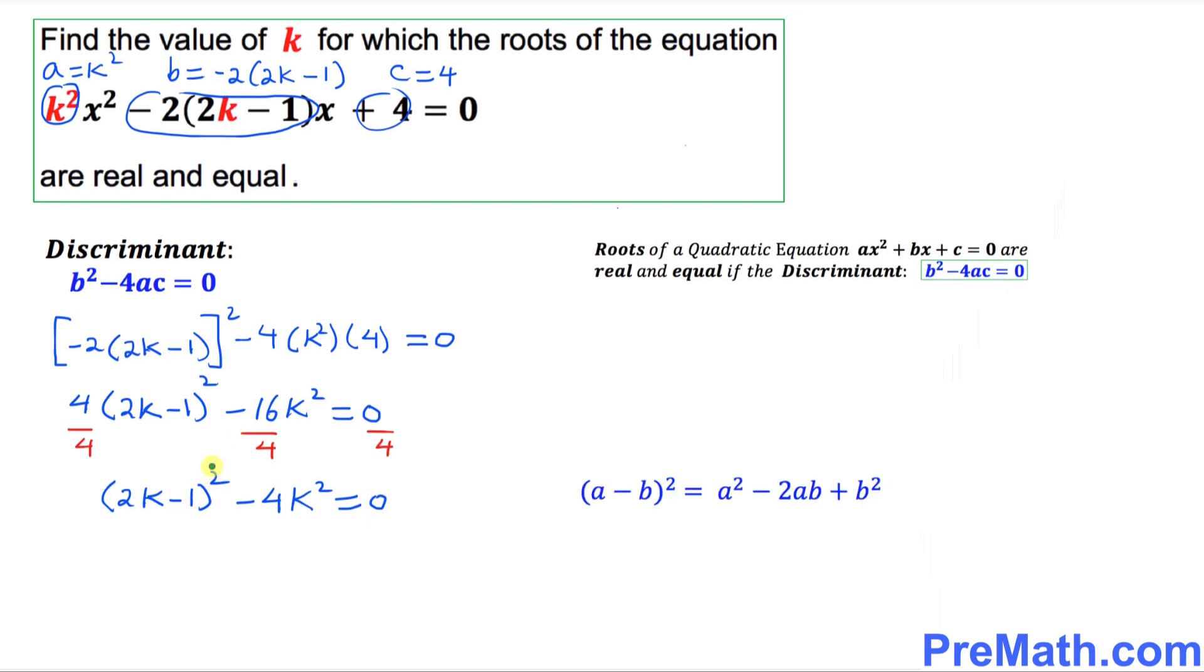In the next step, we are going to expand this binomial using this well-known formula. Let's start working on that. This is our A, this one is our B. So let's expand it. That is going to give you 4k² - 4k + 1 - 4k² = 0.